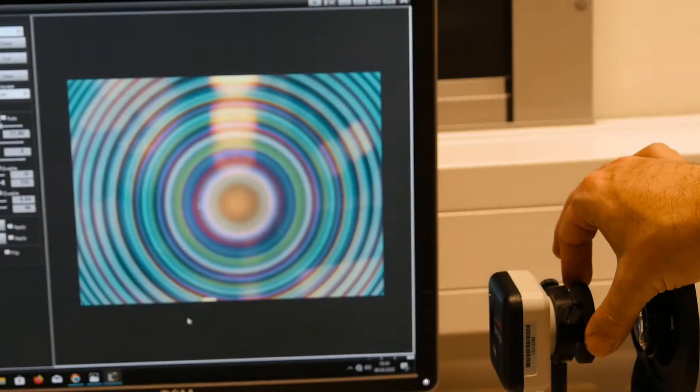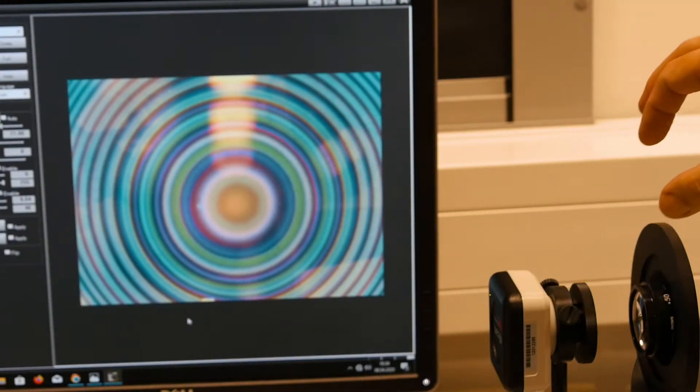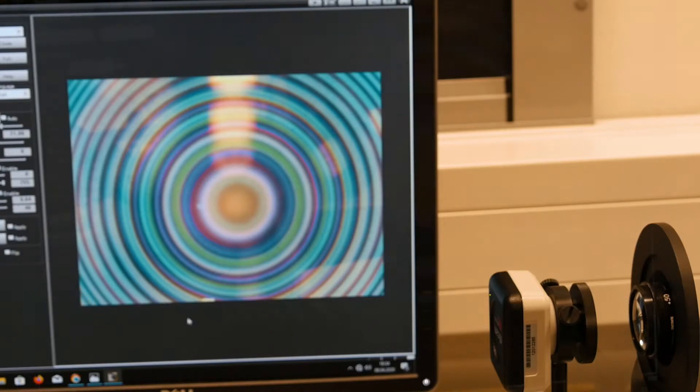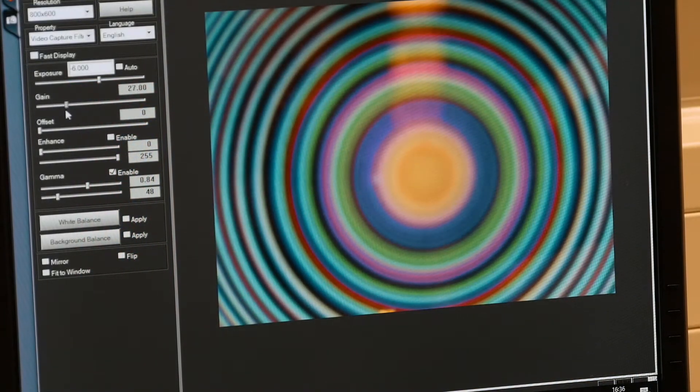Adjust the interference pattern on the CCD camera. One can adjust the CCD camera's contrast, brightness, and saturation settings on the computer.